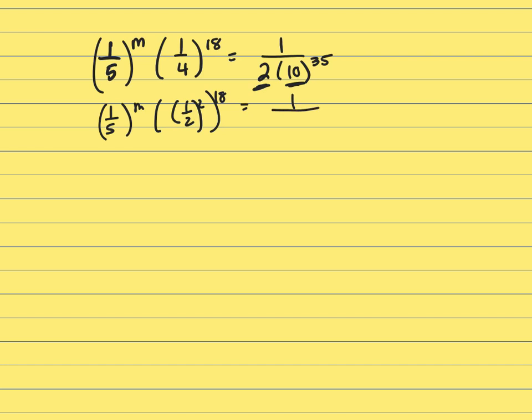And of course, I've just got 2's and 5's on the left. Let's rewrite this right hand side, rewrite that 10 as 2 times 5. That's 2 times 5 to the 35th.